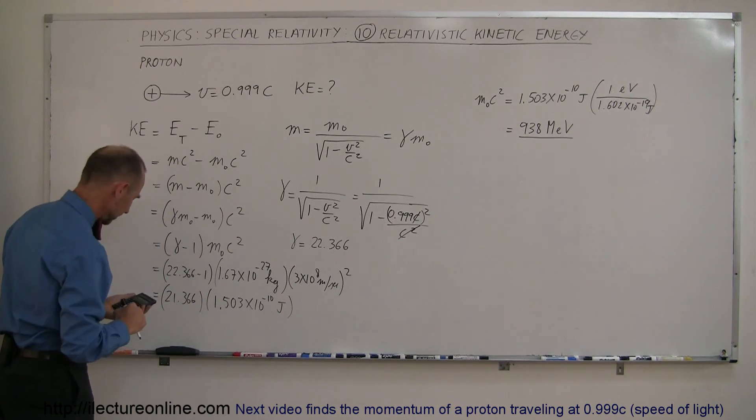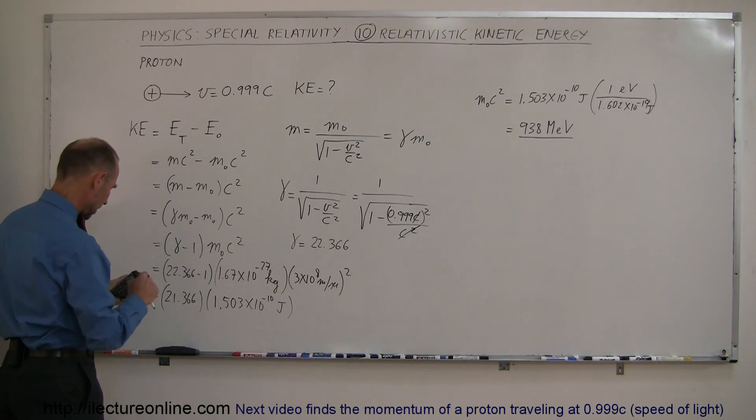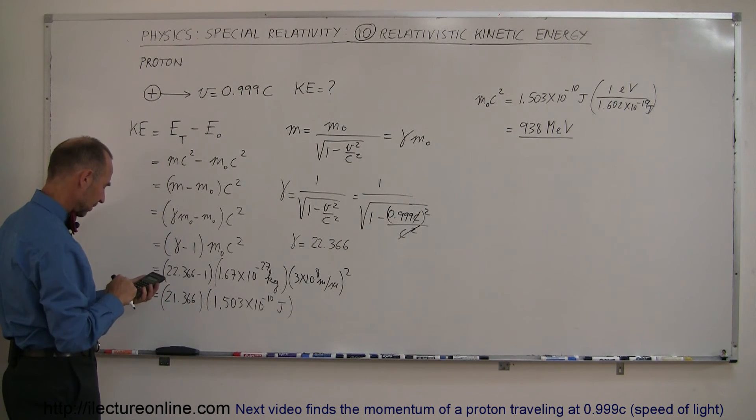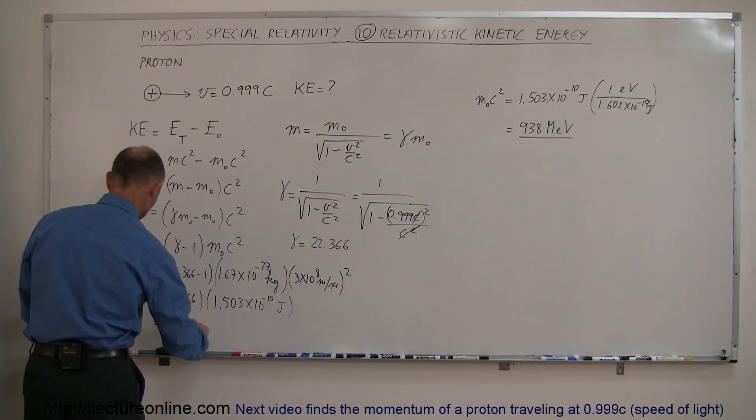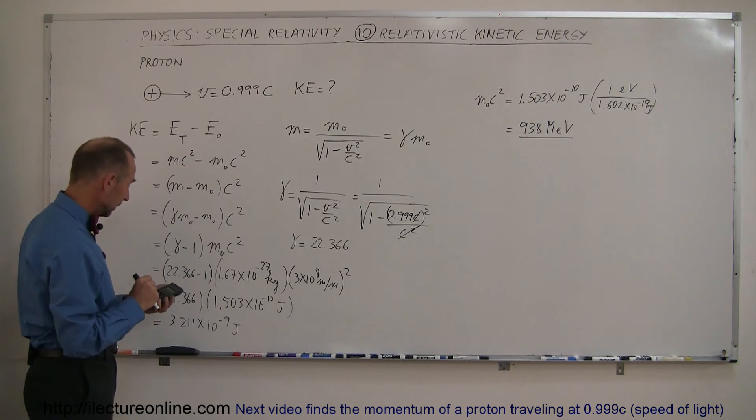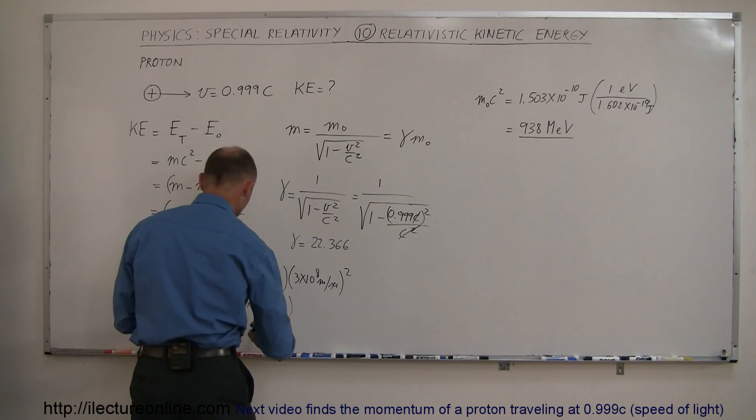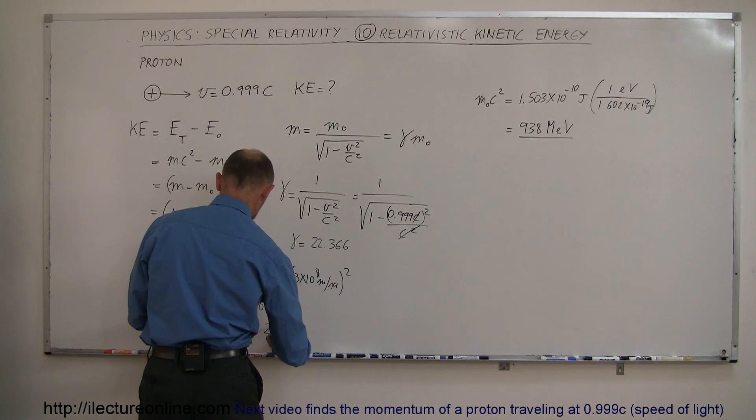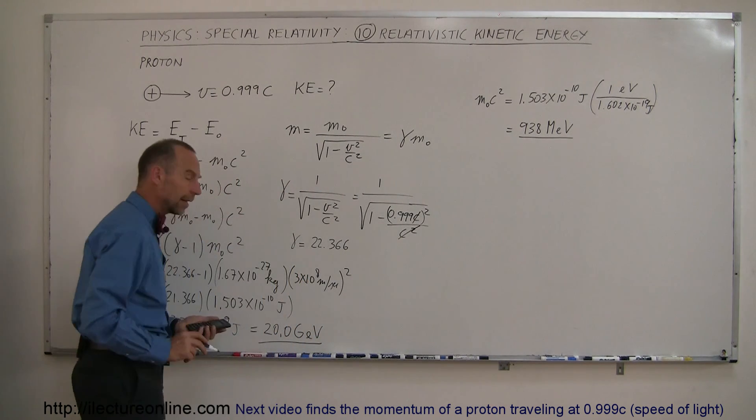If we now multiply this times that, so again, I multiply that times 1.602e to the 19 minus, multiply that times 21.366 equals, so this would be equal to 3.211 times 10 to the minus 9 joules. And if I then divide that by 1.602e19 minus, if we convert it to electron volts, this would be equal to 20.0 GeVs, or gigaelectron volts.